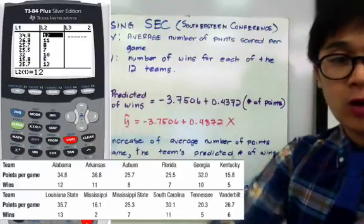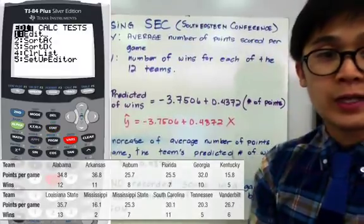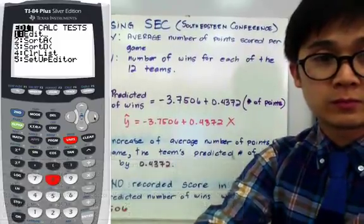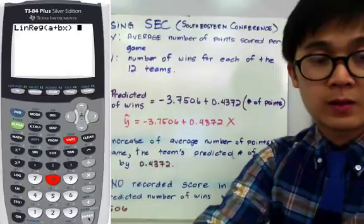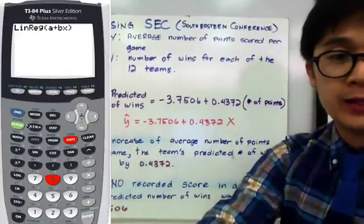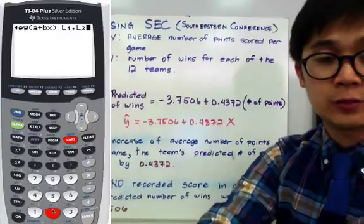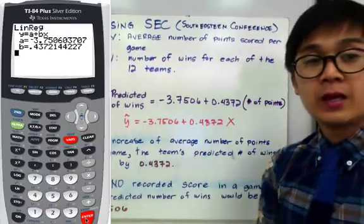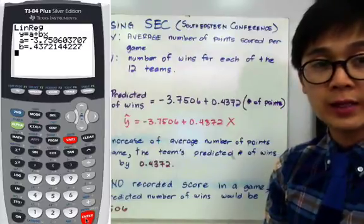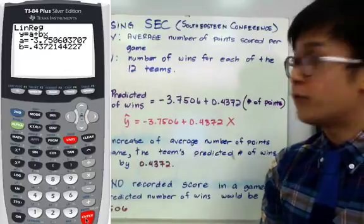To find a and b, go to STAT and push 8 for linear regression, then plug in list 1 and list 2 by pressing second function L1, comma, second function L2, and then push ENTER. The calculator will automatically generate the value of a, which is the y-intercept, and b, which is the slope, for our linear model.